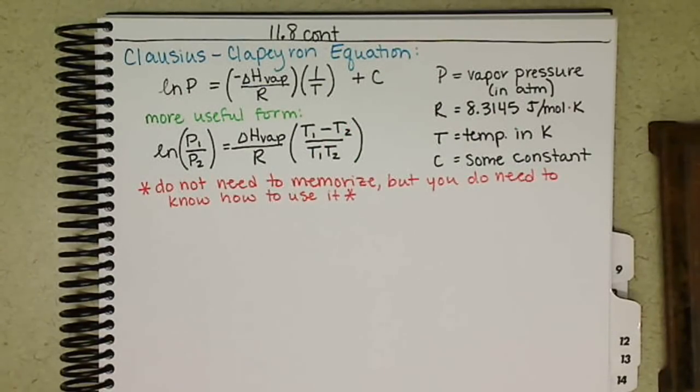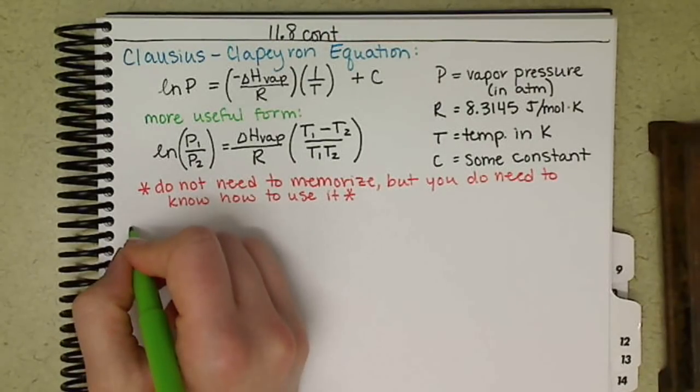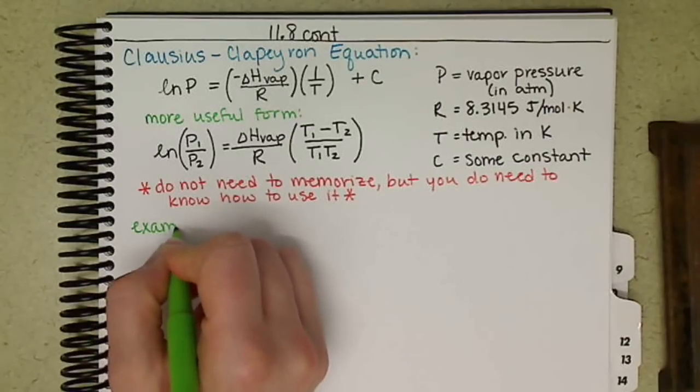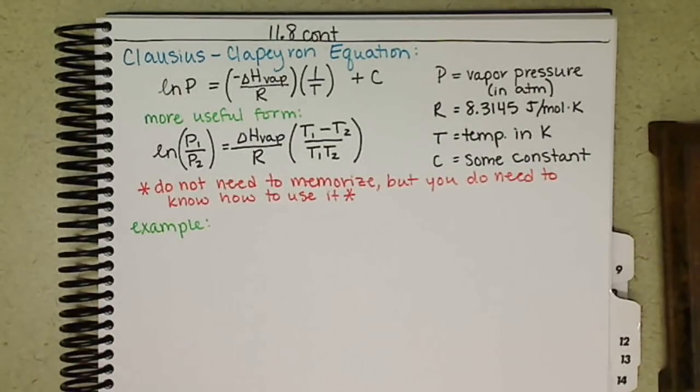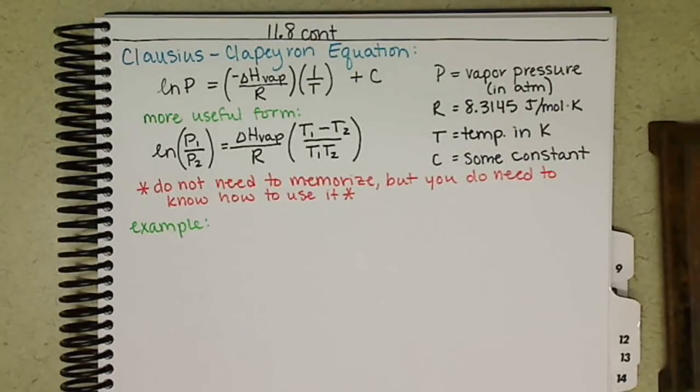So I promised you an example. And again, as I mentioned in class, the math is not difficult. It's just simple algebra, but it's not the easiest algebra. It takes multiple steps and having patience and making sure that you do the appropriate steps in the appropriate order. So we're going to take a sample of ethanol at 34.9 degrees Celsius, at 100 millimeters of mercury,